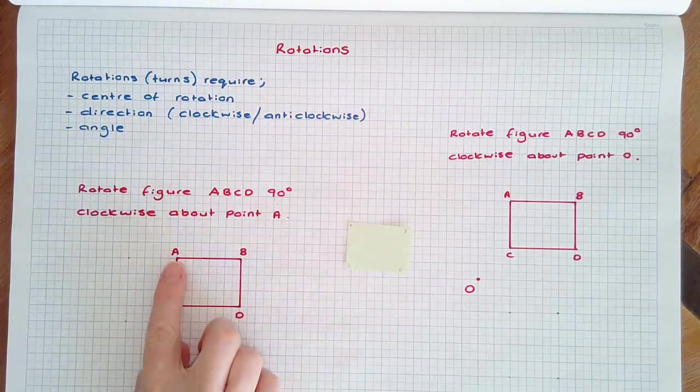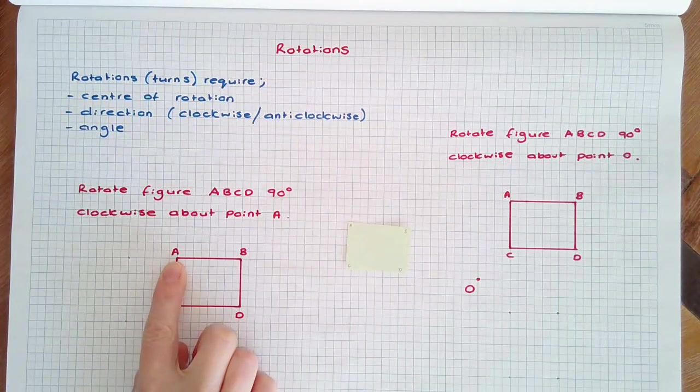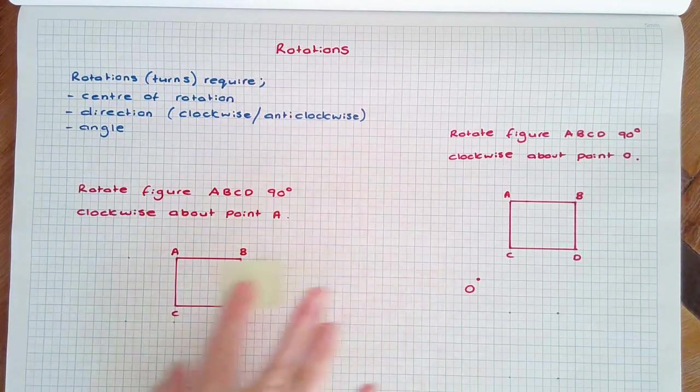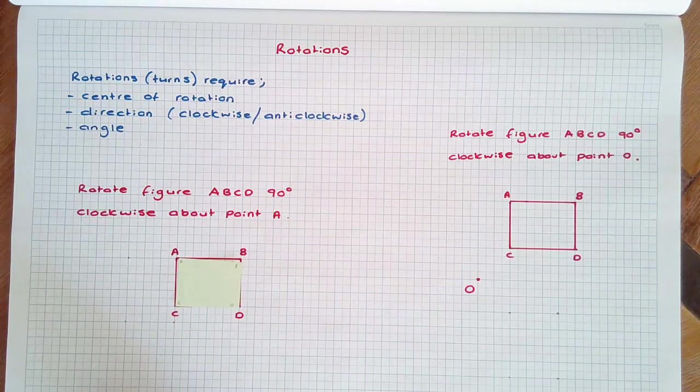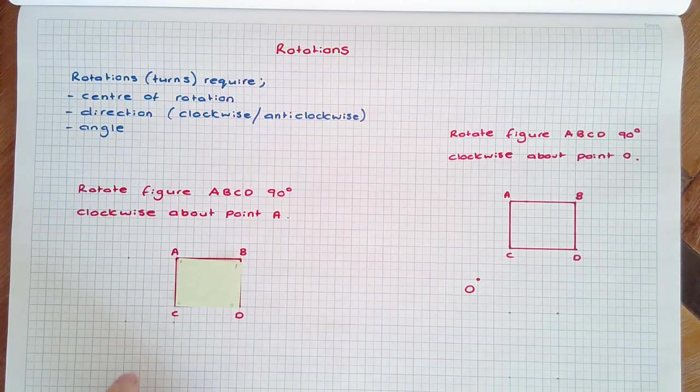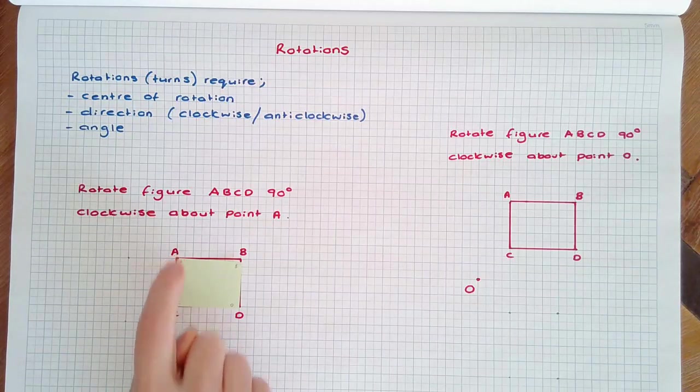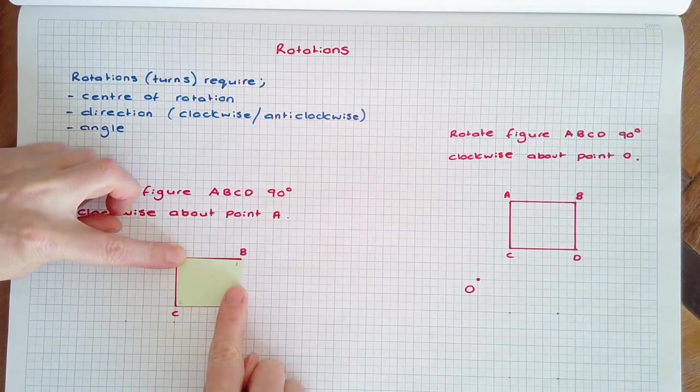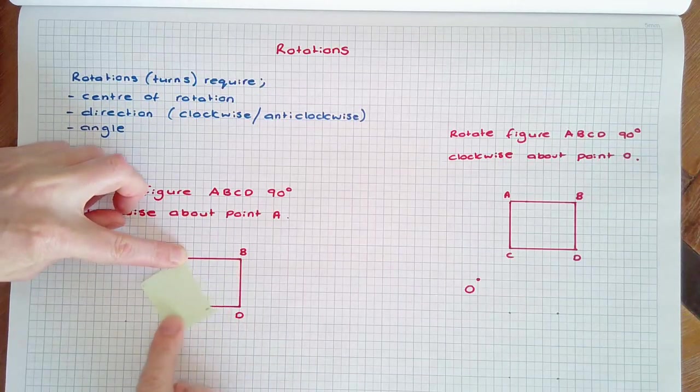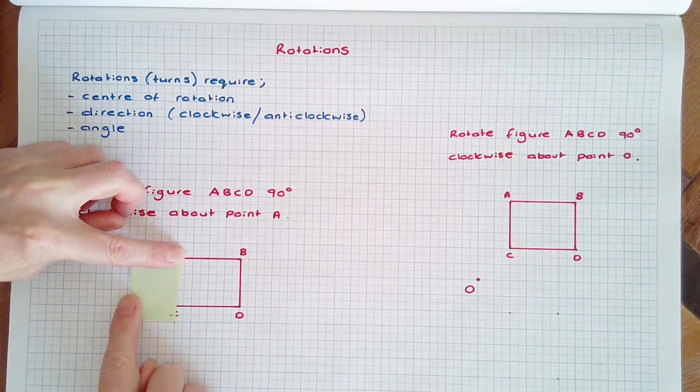If A is the centre of rotation, and the figure ABCD is rotated 90 degrees clockwise, every point will move 90 degrees. A is the fixed point, so it's easy to see with my cutout that when I rotate the shape 90 degrees clockwise, where it will finish.